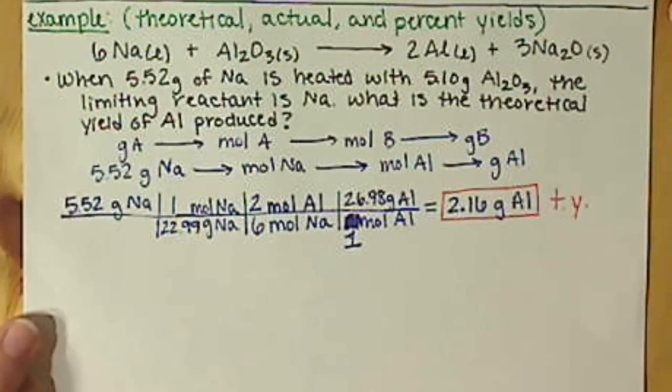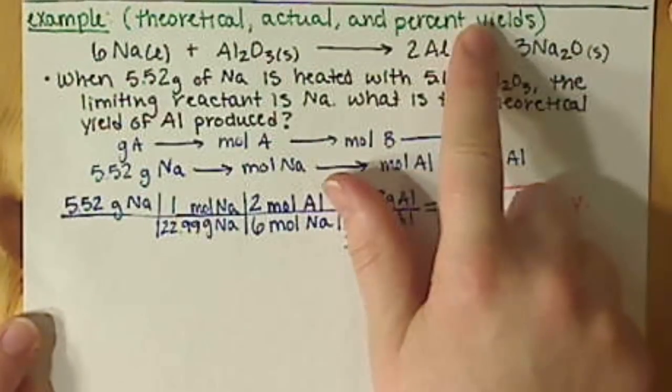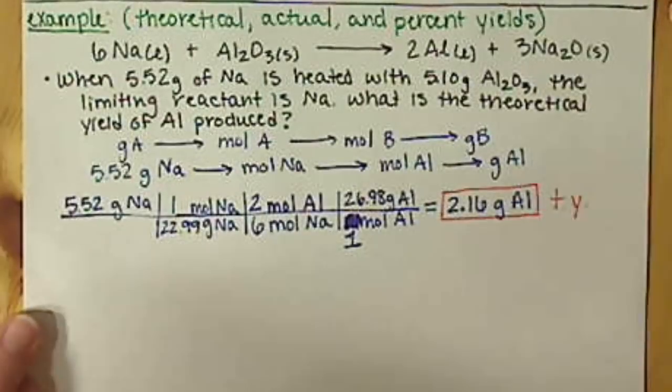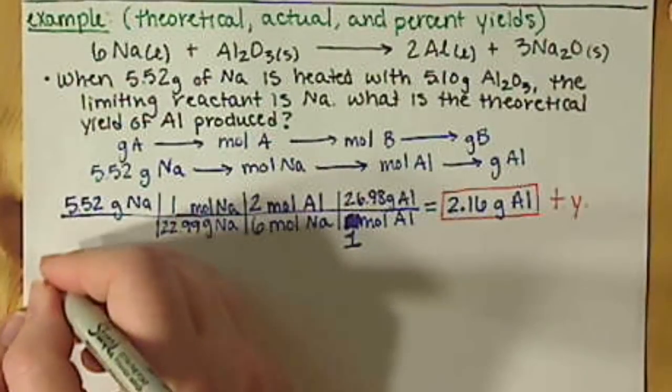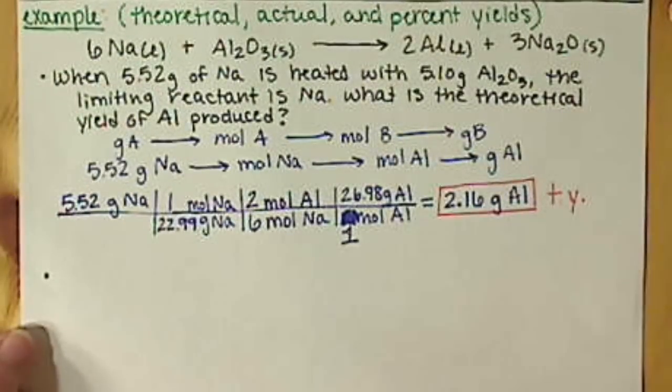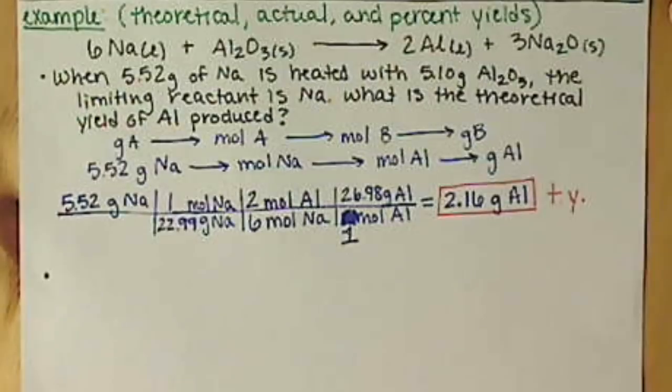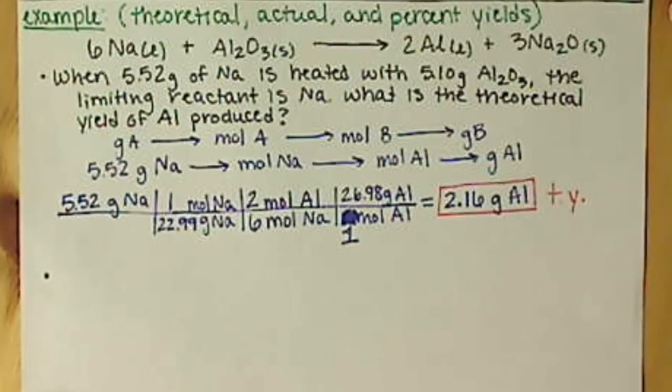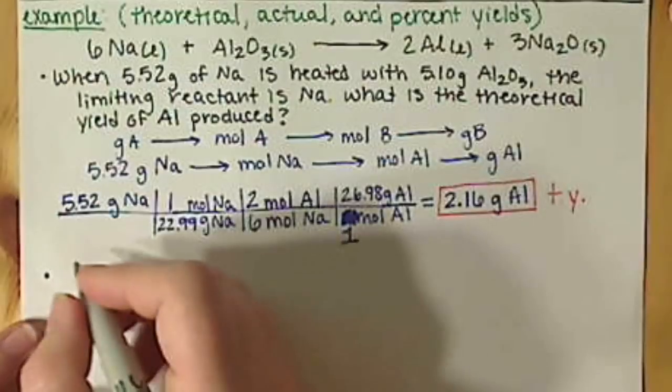But, remember we're looking at theoretical. We want actual and percent yield. So, our second question. I'm dealing with the same calculation here. Is let's say we perform this experiment. And we get 1.85 grams of aluminum. That's how much we actually obtain. What is the percent yield then?